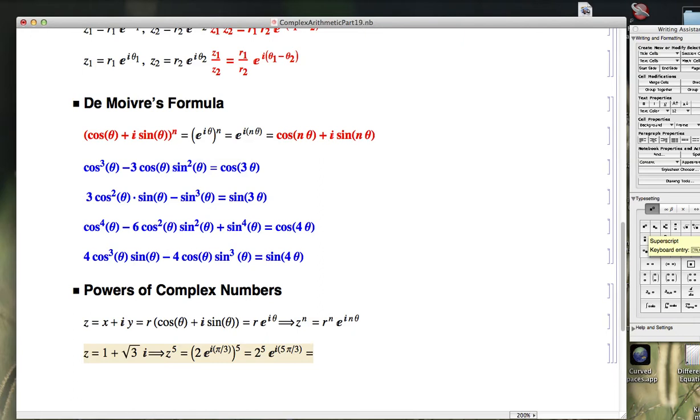You can write that back in rectangular form. You can figure out cosine of 5 pi over 3 and sine of 5 pi over 3. Think about that. 5 pi over 3, that's the same as 300 degrees. That would be down in the fourth quadrant.